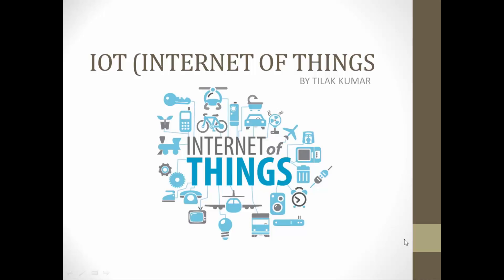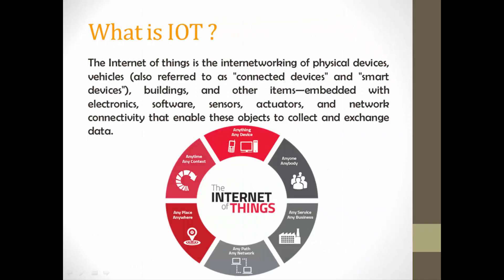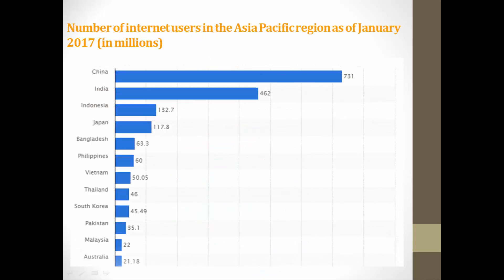First, what is IoT? You can see the meaning of IoT on the screen. According to Google, we can connect all our physical devices which are embedded with electronic software or sensors and having network connectivity, so they can be connected together and exchange data. We can also say that every device which has a valid IP address is called an IoT device.